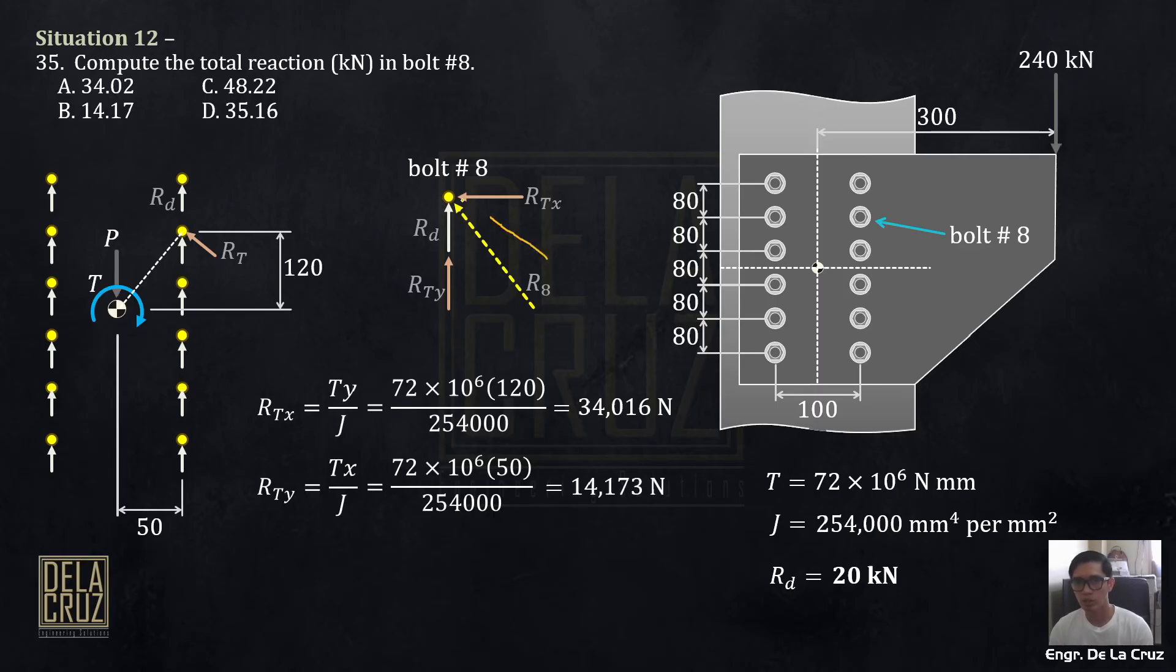Now, we can get the total reaction, bolt reaction. R sub 8 is square root of RTX. This, RTX squared. I made it kilonewtons. From newtons, I made it kilonewtons. And, this, total vertical, or total Y, is RTY 14.173 kilonewton plus 20 kilonewtons to RT. Squared. So, this is the answer for number 35. 48.22.